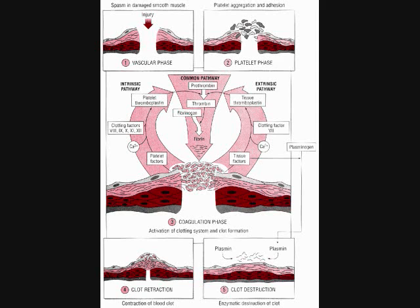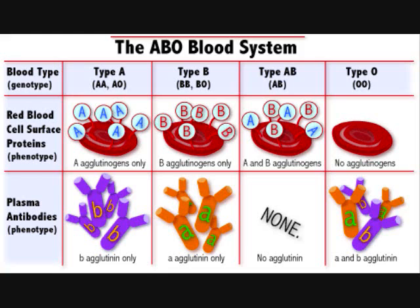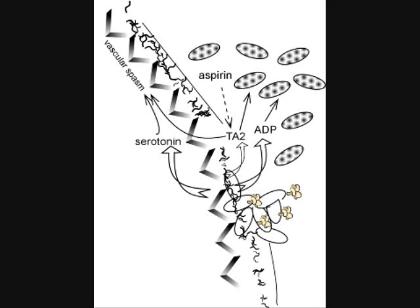The three important steps observed in hemostasis are vasoconstriction, primary hemostasis, secondary hemostasis, and fibrinolysis. In this diagram, we observe platelets, the basement membrane, the blood vessel wall, and the subendothelial connective tissue collagen. Following injury, the first step is vasoconstriction, also known as a reflex neurogenic reaction.